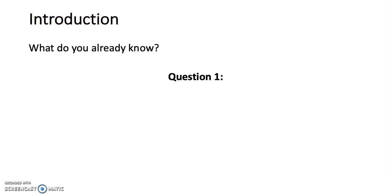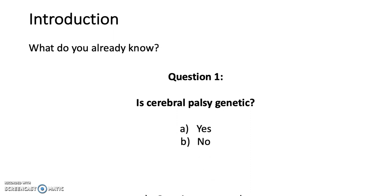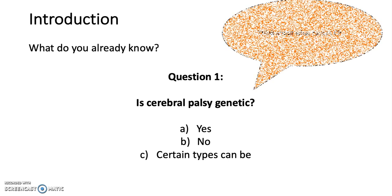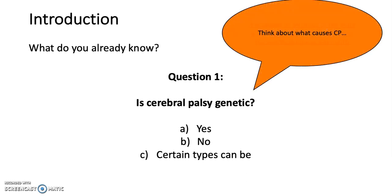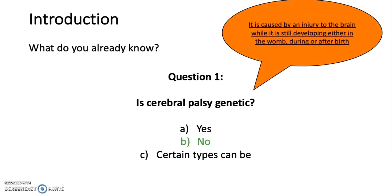So let's go back through the questions from the beginning and see if we've learnt anything. Question 1: Is cerebral palsy genetic? A. Yes. B. No. C. Certain types can be. The answer is No — it's caused by an injury to the brain while it's still developing, either in the womb, during or after birth.